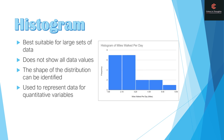Last but not least, let's look at a histogram. A histogram is best suitable for large sets of data. A histogram does not show all of the data values, but the shape of the distribution can be identified on a histogram. A histogram is used to represent data for quantitative variables.